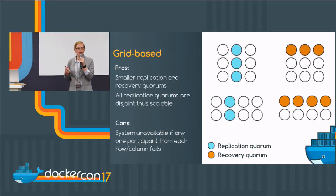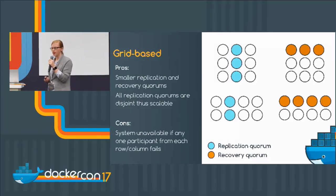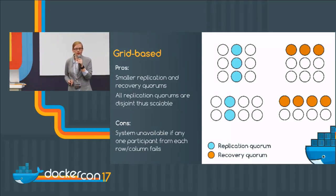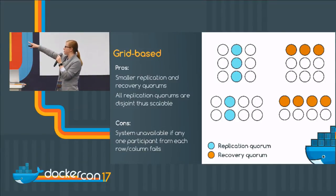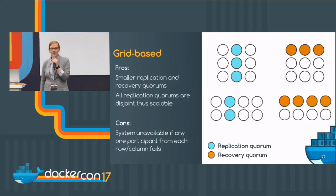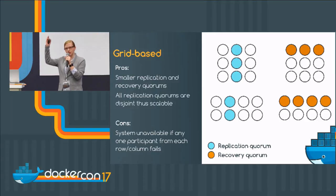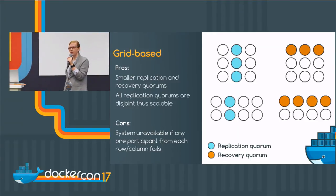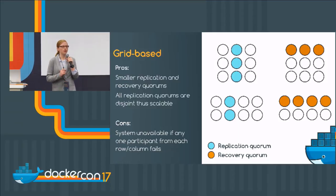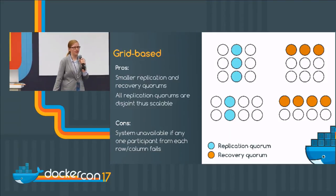The issue with that, though, was that we were getting really big quorums when doing recovery. So here's another system we could use: we can organize our nodes into a grid — a three-by-three grid. We can say for replication, let's just use a column, and for recovery, let's use a row. And that way we know there's always going to be an intersection.